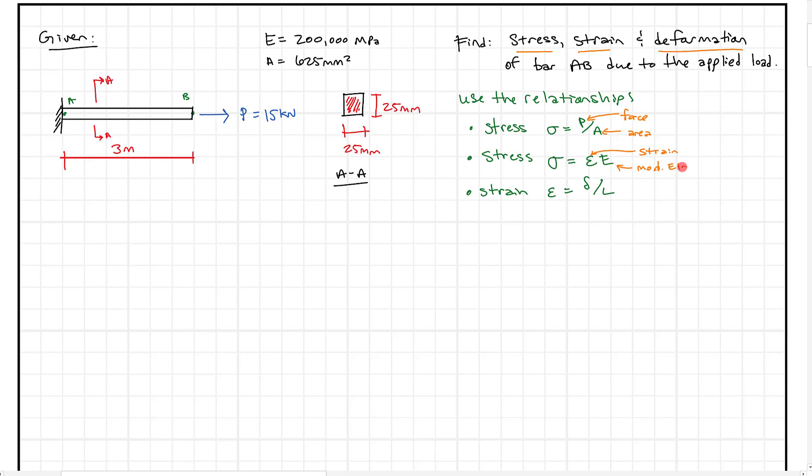So likewise, this last equation here, we have strain is defined as the deformation, or the amount this thing gets longer or shorter times the initial length. And what we know for this problem is the deformation is going to get longer because the bar is in tension. So these are the formulas that we're going to use to define these parameters.